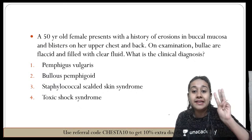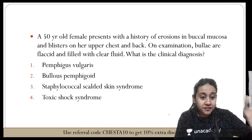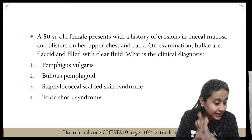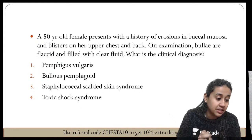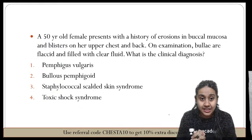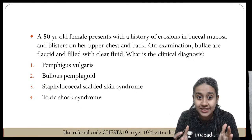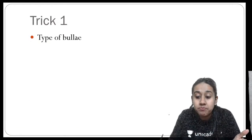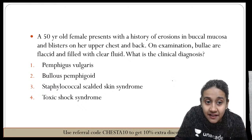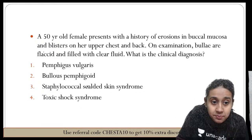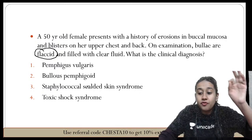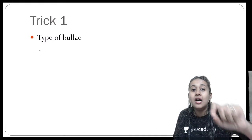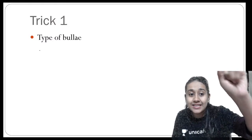The correct answer here is pemphigus vulgaris. Now how to solve these types of questions — Trick Number One is: what type of bulla? In this question, they have given that the patient presents with flaccid bullae. So the first thing to remember is what type of bulla is seen in the question.